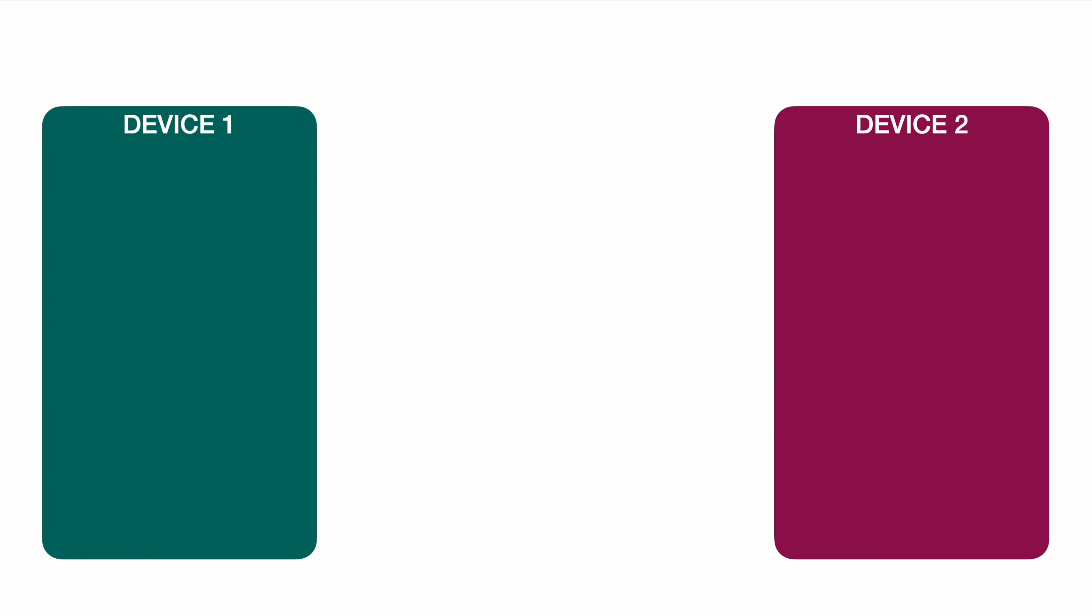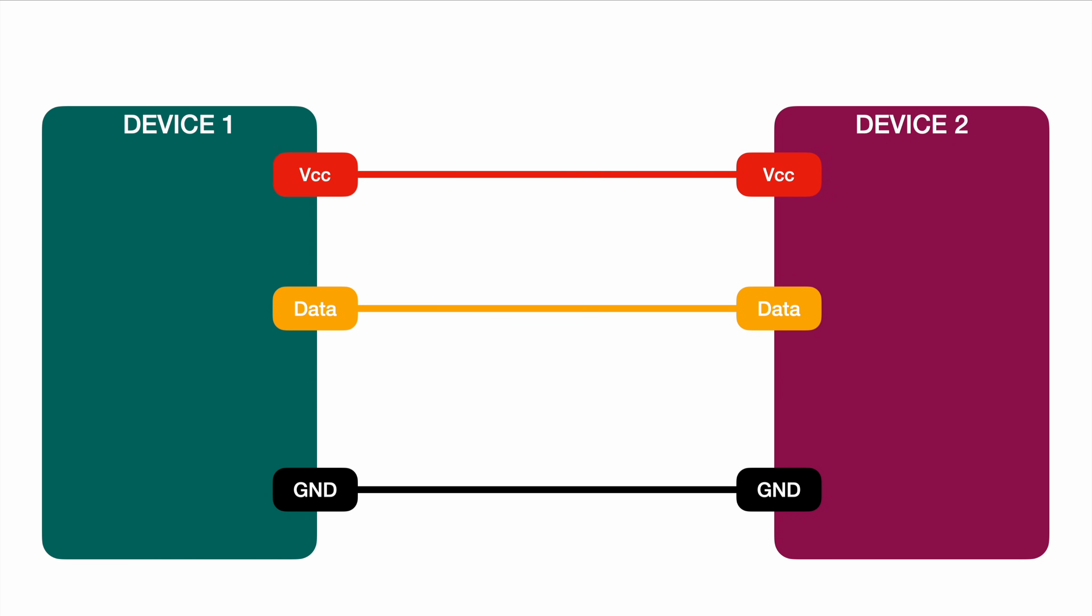When talking about pull-up and pull-down resistors, we normally talk about communication between two devices at least. No matter which type of communication, you normally want to make sure to have a common ground. Beside that, you obviously have some kind of data line and also some kind of power line. So as a minimum for communication we would have three lines.